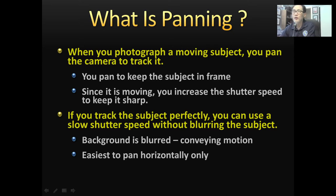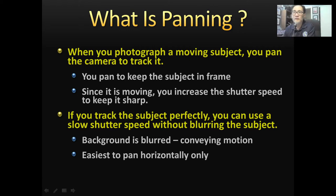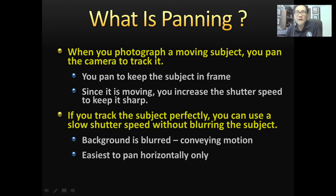When you take pictures of moving objects, you aim at the object and as the object moves, you move the camera with it — that is basically called panning. Most of us, when we're taking pictures, already do the panning. But today I want to introduce you to a technique where you reduce the shutter speed way lower than what you normally do, to create blur in the background and convey motion. I'll show you with some examples.